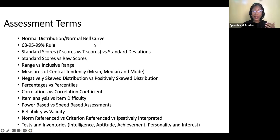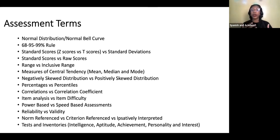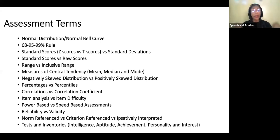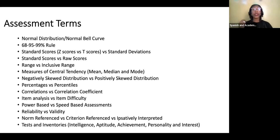Here are the assessment terms that you will need to know: Normal distribution, also called the normal bell curve. The 68, 95, 99 rule — sometimes seen as a 68%, 95%, 99% rule — which has to do with the normal bell curve or the normal distribution. Standard scores — specifically Z scores versus T scores versus standard deviations. Standard scores versus raw scores. Range versus inclusive range. The measures of central tendency, which include the mean, median, and mode. Negatively skewed versus positively skewed distributions. Percentages versus percentiles. Correlations versus correlation coefficient. Item analysis versus item difficulty. Power-based versus speed-based assessments.